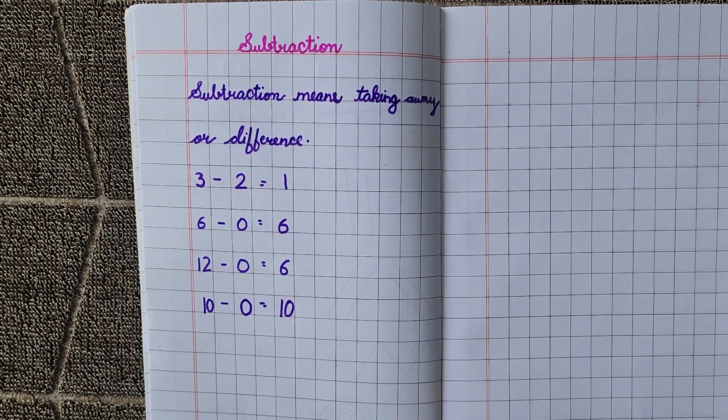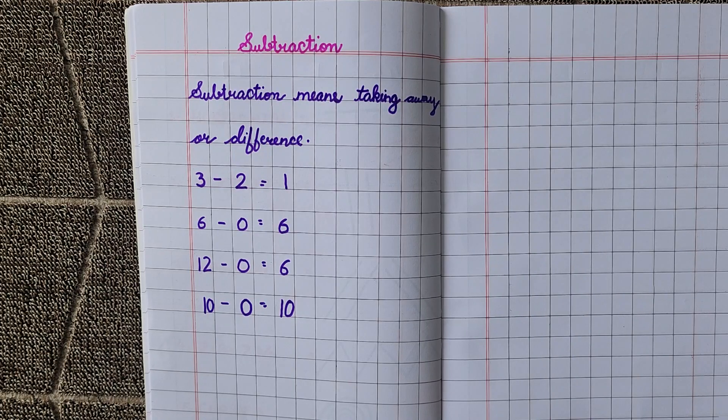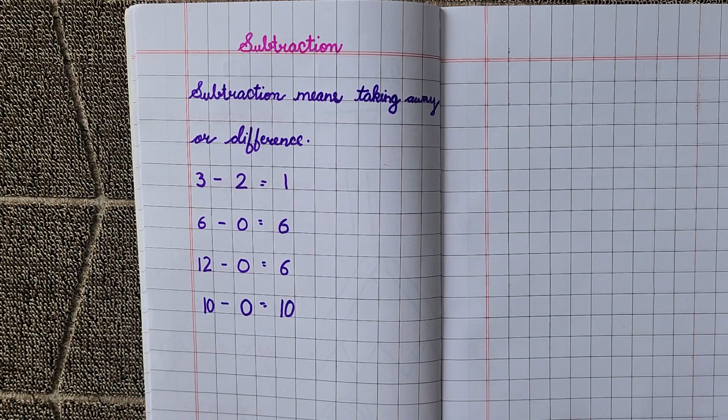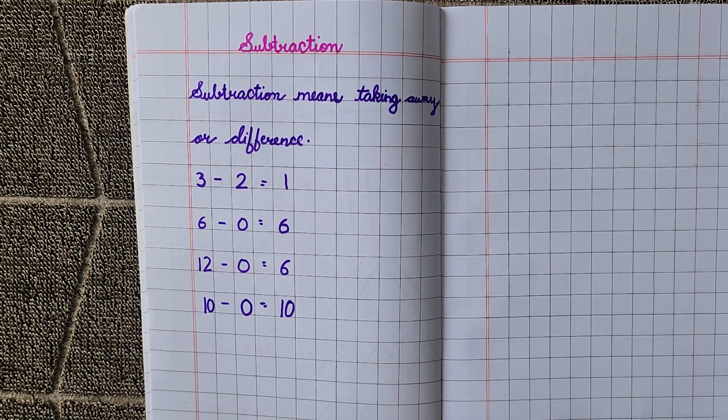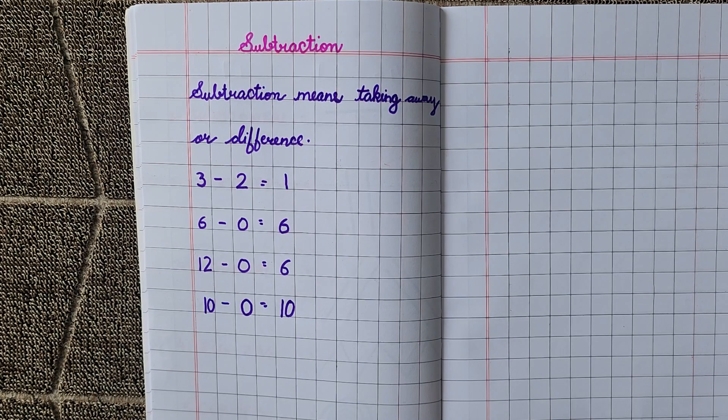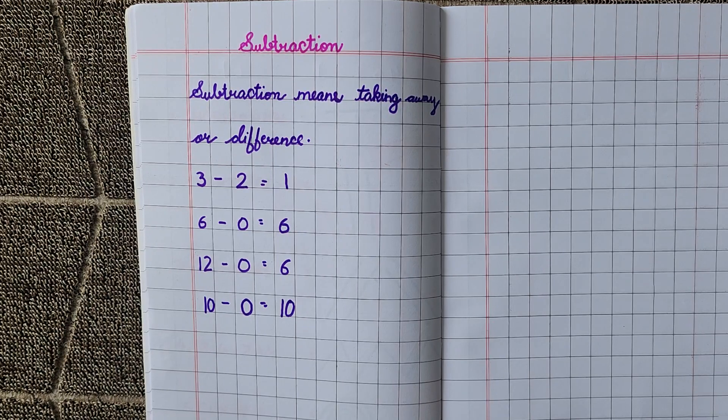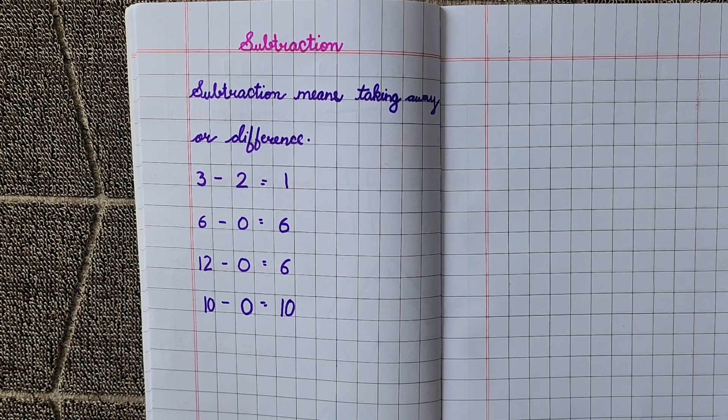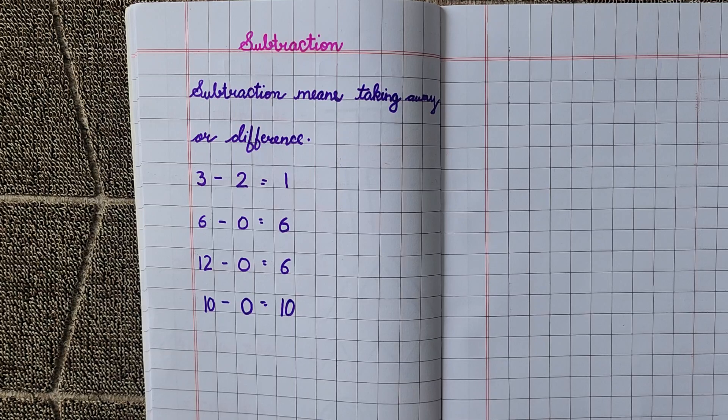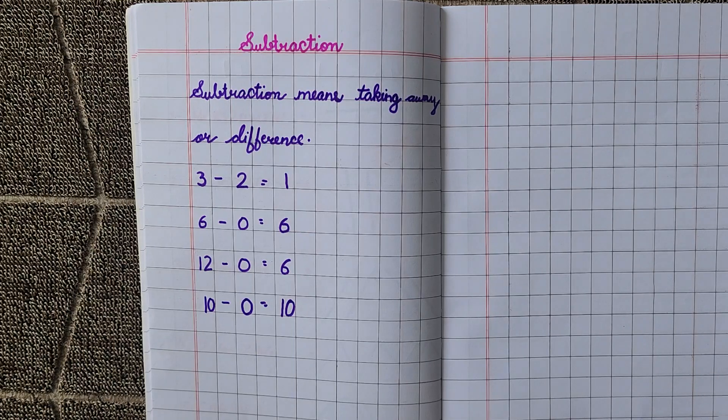I repeat, subtraction means take away. Subtraction ka kya matlab hota hai? Le lena. Hame nikal na us mein se. Jo cheeze hai, un mein se humne kuch nikal na. Ab humare paas kitne bache? That is called subtraction. Okay students, I hope you understand this concept very well. In the next video I will bring you lots of exercises so that if you still have any doubts, then your doubts will be cleared. If you like my video, then do comment in the comment box. Till then, bye, take care and have a nice day.